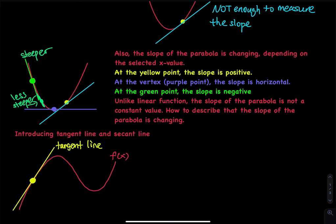Next question: having one point, is this enough to calculate the slope? The answer is no. The slope formula y2, y1, x2, x1 requires four numbers. You only have one point so far, which gives you x1 and y1. That's all you have. So how do you get another point? To get another point, I have to use a secant line.